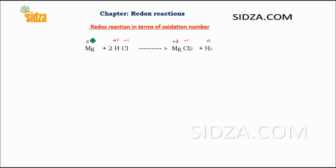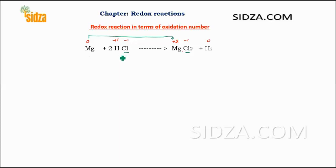In magnesium, you see an increase in oxidation number. There is no change in the oxidation number of chlorine — it is minus one on both sides, so it neither undergoes oxidation or reduction. But hydrogen changes its oxidation number from plus one to zero, so there is a decrease in oxidation number for hydrogen and an increase for magnesium.